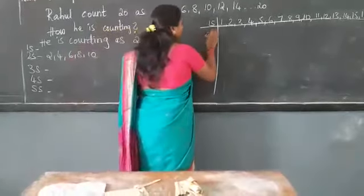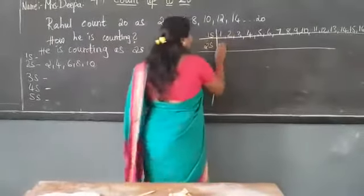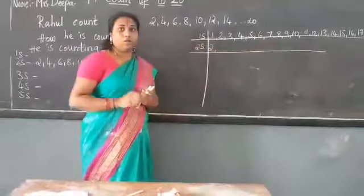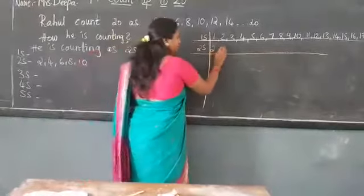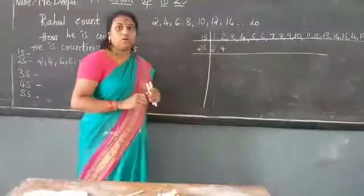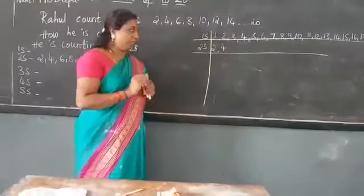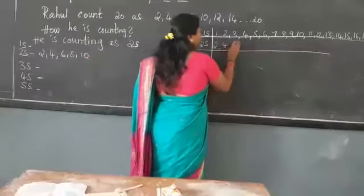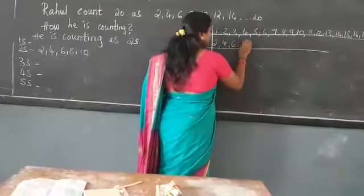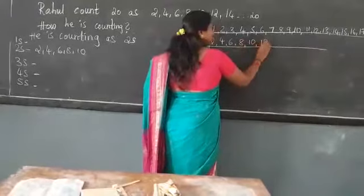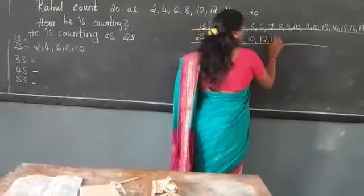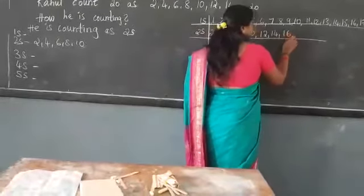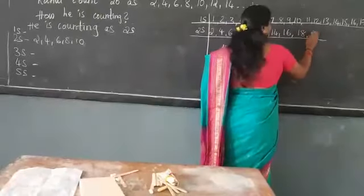We are going to learn 2s. 2 has 4. With the help of the pictures we will do. 2, 4, 6, 8, 10, 12, 14, 16, 18, 20.